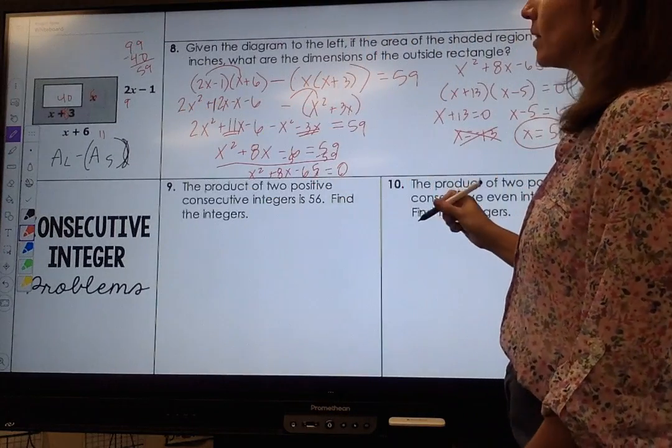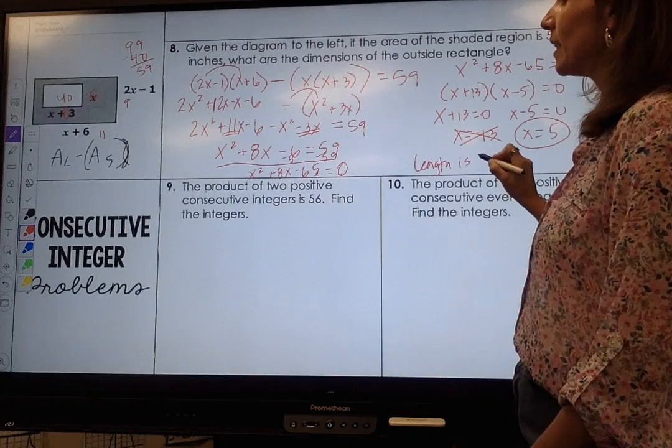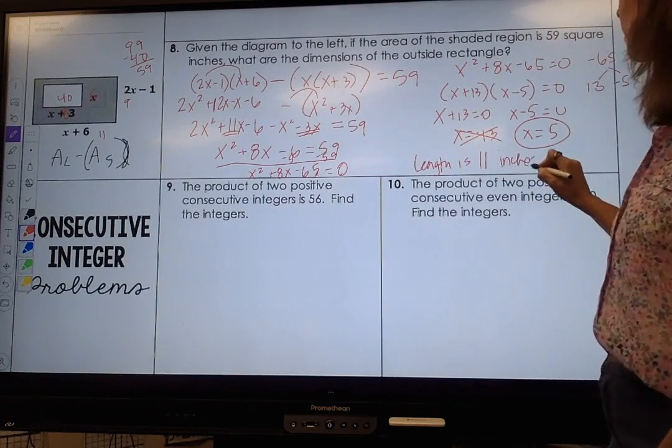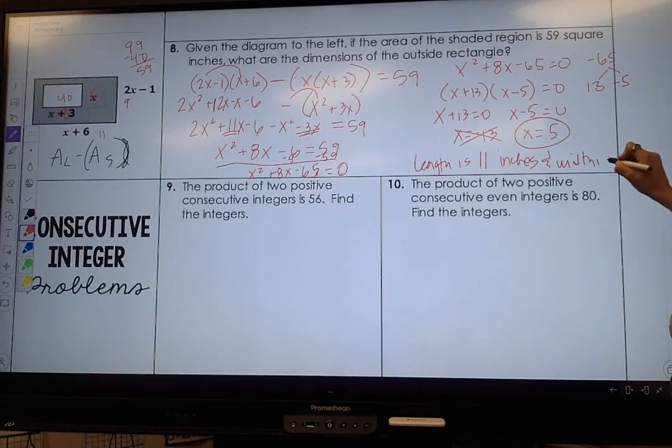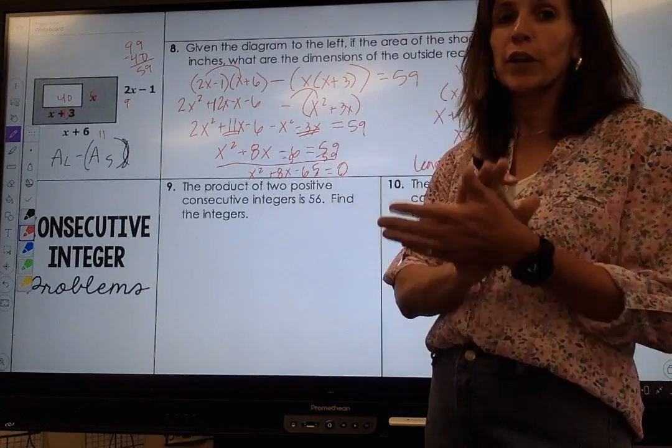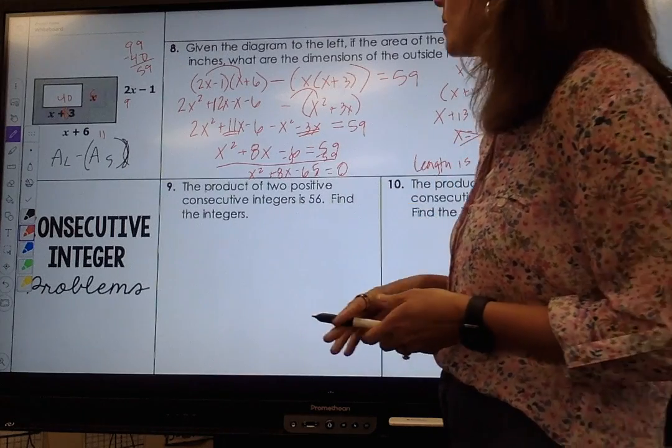It's asking for the dimensions so you're going to write in full sentence: Length is 11 inches and width is 9 inches. Remember these problems: area of the large minus area of the small. Now let's move on to consecutive integers.